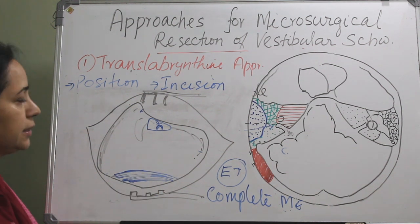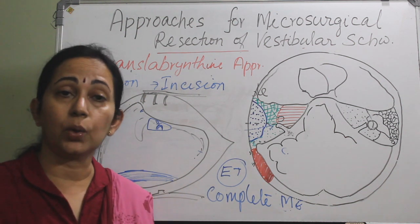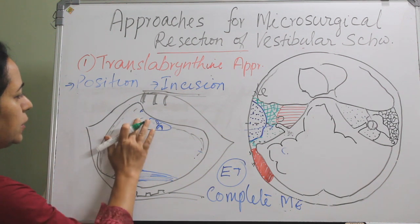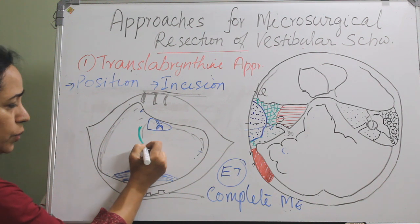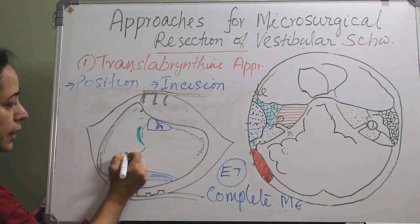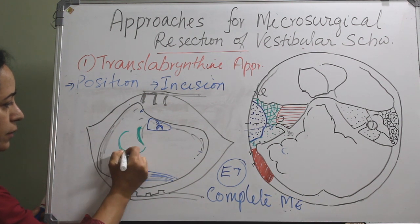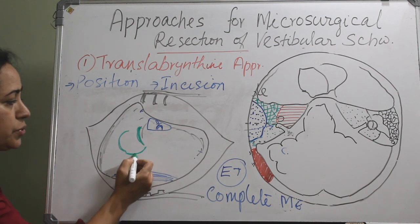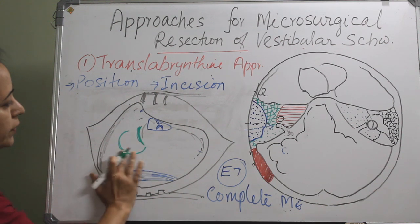Next we proceed with labyrinthectomy, all done using a diamond burr with copious irrigation. The semicircular canals are removed in the following order: first the horizontal canal, then the posterior canal, then the common crus, and finally the superior canal.